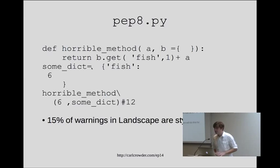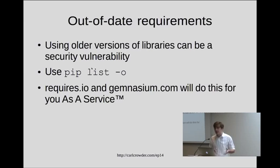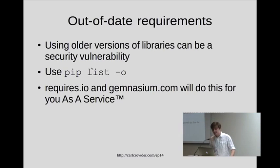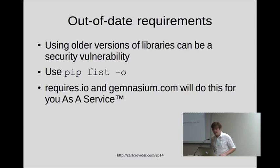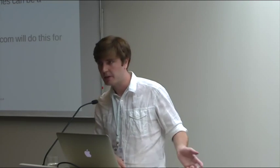Up until now I've talked about things you can find by checking your code for errors. But a project isn't just the code. Especially for web applications, having old versions of requirements can be a vulnerability — ask anyone in the Rails community. Fortunately Django hasn't had so many problems, but there are consistently security bug fixes that come out. You can check this using pip list on pip version 1.4 or newer — it will tell you what requirements you have that are out of date. For something more involved, there's requires.io and gymnasium.com, which take your code from GitHub, look at your requirements.txt or setup.py, and tell you which libraries are out of date and whether it's a security problem or just a minor update.